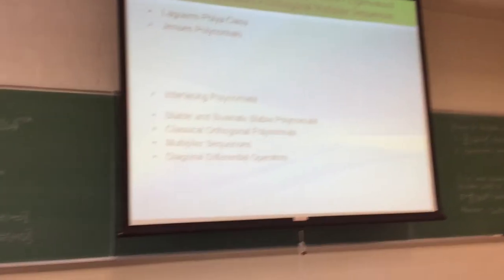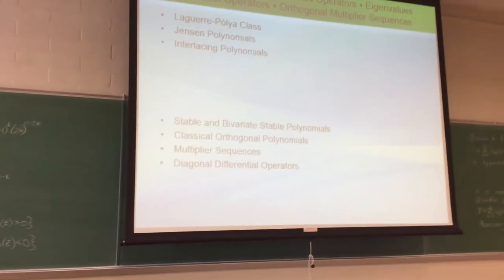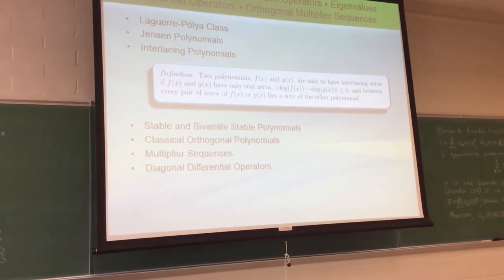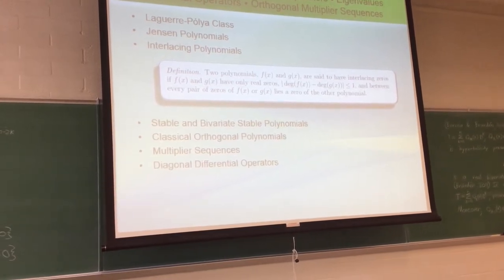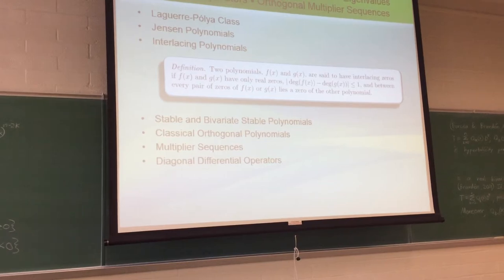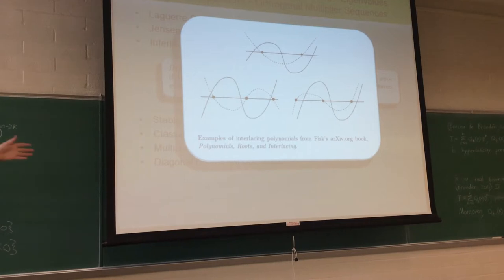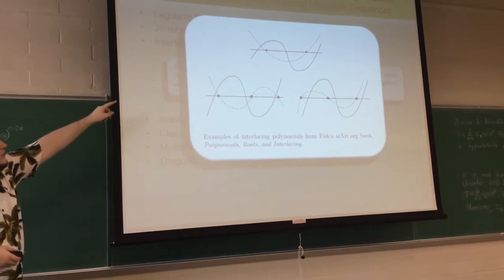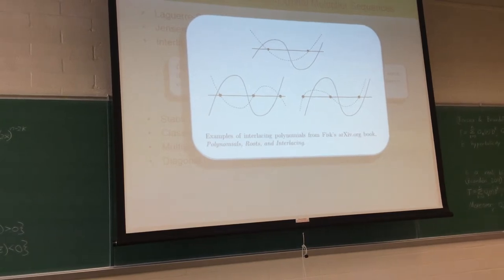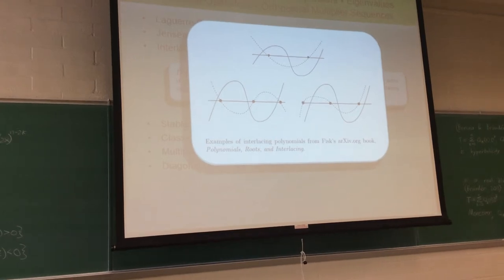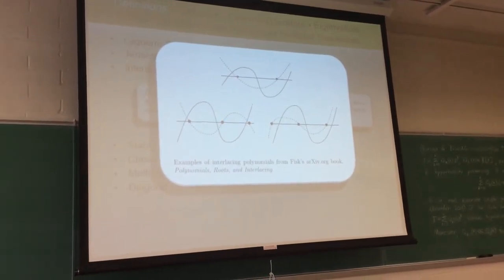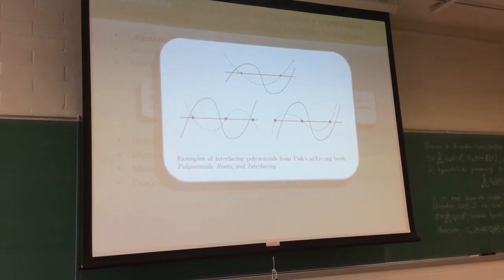Interlacing polynomials: two polynomials f(x) and g(x) are said to have interlacing zeros if they have only real zeros, are within a degree of each other, and every two zeros of f contain a zero of g between them — their zeros do a meshing pattern. Examples from Fisk's book demonstrate this: the zeros of a solid line lie between the zeros of a dotted line. Fisk has an 800-page book on interlacing polynomials — quite a nightly read.